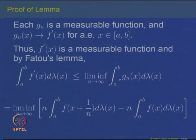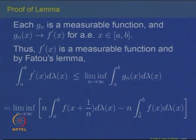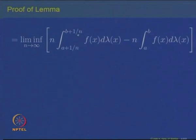Now let us compute this quantity. The integral of gₙ splits into n times the integral from a to b of f(x + 1/n) dλ minus n times the integral from a to b of f(x) dλ. Using the fact that Lebesgue measure is translation invariant, the integral of f(x + 1/n) from a to b can be rewritten as the integral of f(x) from a+1/n to b+1/n. So the right-hand side becomes the limit inferior as n→∞ of n times [integral from a+1/n to b+1/n minus integral from a to b] of f(x) dλ.